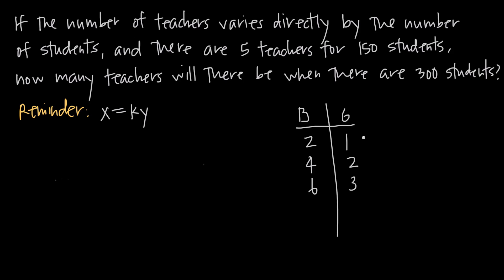As you can see, we're increasing the number of girls and when that happens we increase the number of boys. Because both values are increasing together, we say there's a direct relationship between boys and girls. That's what we mean by direct variation — they vary together, moving in the same direction.